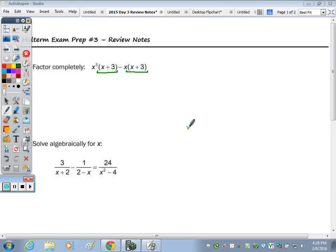In number one, we need to factor completely. Both expressions have a common factor of x plus 3, so I want to pull out the x plus 3. And the other two terms get put in the second factor.